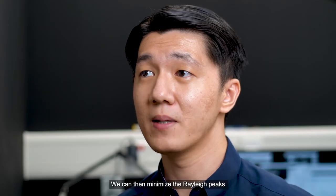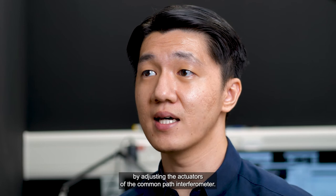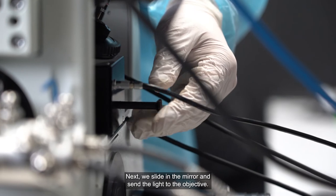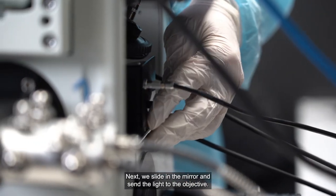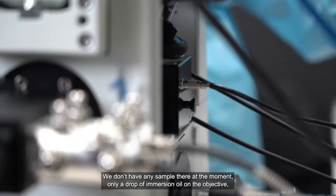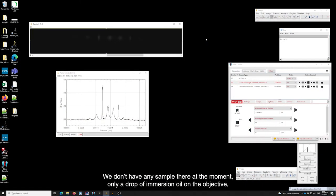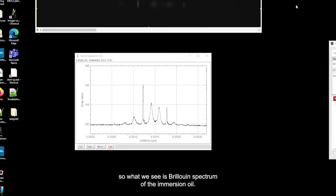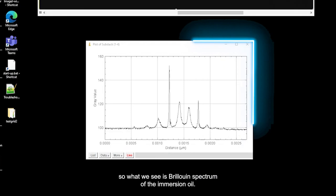We can then minimize the Rayleigh peaks by adjusting the actuators of the common path interferometer. Next, we slide in the mirror and send the light to the objective. We don't have any sample there at the moment, only a drop of immersion oil on the objective. So what we see is the Brillouin spectra of the immersion oil.